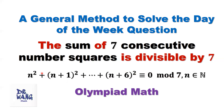The sum of consecutive number squares — we have seven of them. This is the mathematical notation, called congruence. It's a kind of equivalence under the situation where if both sides are divided by seven, we will have the same remainder on both sides. This means modulo seven.